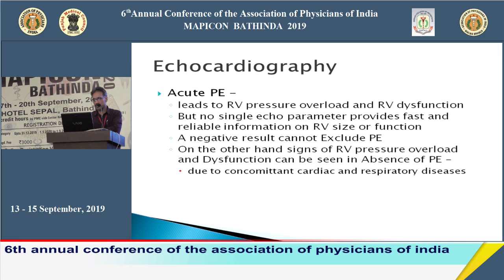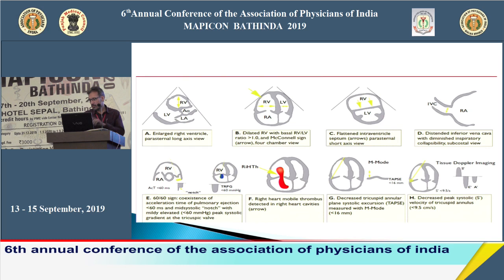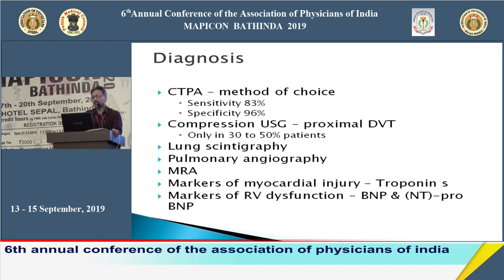On echo, RV dilatation is identified when RV becomes equivalent to or greater than LV — normally RV is one-third of LV. Mobile thrombi can be seen in two to three percent of patients. If RV dilatation is found on echo, CT pulmonary angiography is the next investigation of choice, with sensitivity and specificity of 83 and 96 percent respectively.